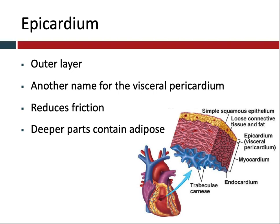The epicardium is another name for the visceral pericardium. When we're talking about the walls of the heart itself we call it the epicardium; when we're talking about the pericardium pouch, we call it the visceral layer of the serous pericardium. It does the same thing as its role as part of the serous pericardium, which is to reduce friction. Underneath the part that helps with lubrication and reducing friction, it also contains adipose, or fat, which is helpful for some cushioning.